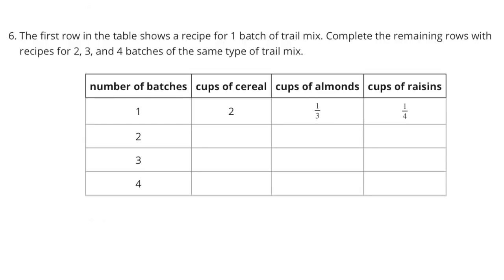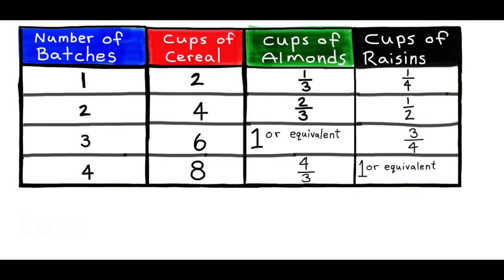Number 6. The first row in the table shows a recipe for one batch of trail mix. Complete the remaining rows with recipes for two, three, and four batches of the same type of trail mix. The number of batches column will increase by one each time: one, two, three, four. The cups of cereal column will increase by two: two, four, six, eight. The cups of almonds will increase by one-third: one-third, two-thirds, three-thirds, four-thirds. The cups of raisins will increase by one-fourth: one-fourths, two-fourths, three-fourths, four-fourths.